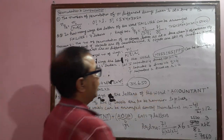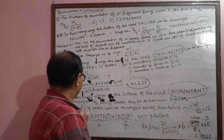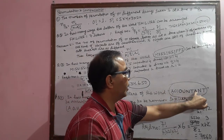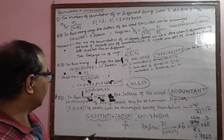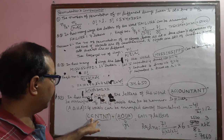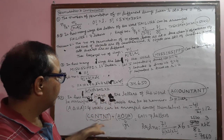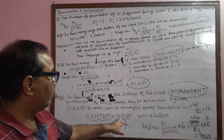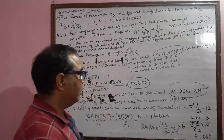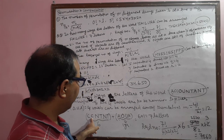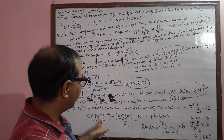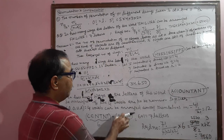Third question: in how many ways can the letters of the word ACCOUNTED be arranged if the four vowels remain together? The four vowels are A, O, U, and A. Apart from vowels, the remaining consonants are C, C, N, T, and T — six consonants in total. The four vowels become one group, so we have six consonants plus one group = seven letters. Required arrangements = seven factorial divided by (2 times 2 times 2) since C, T, and N are each repeated twice.